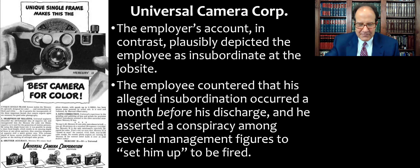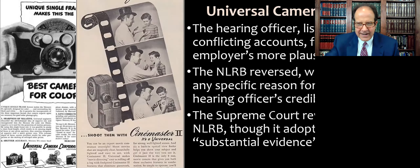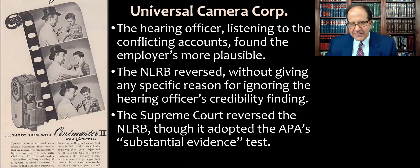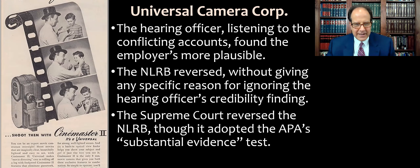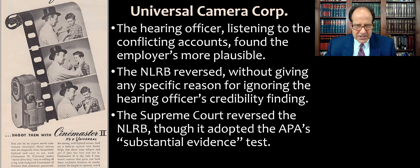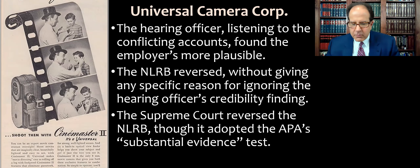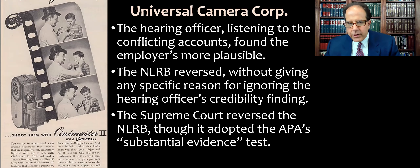The hearing officer for the National Labor Relations Board listened to both sides of the story and thought that the employer was more credible and his account was more plausible. The hearing officer conducted a formal or informal hearing, took testimony, made a credibility determination, and issued a proposed decision, which then went to the board for review.